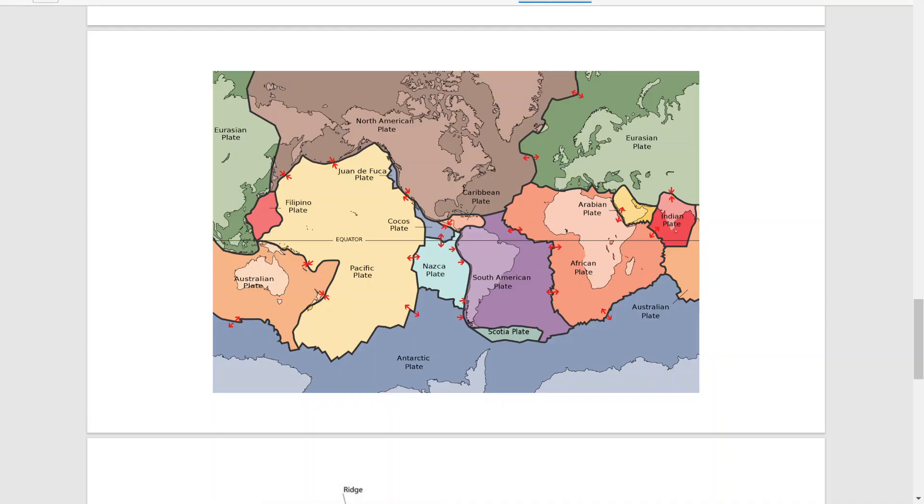As we move on from that to the more modern day picture, here's a nice quick graphic of all the different plates. Ireland, obviously, is here on the Eurasian plate. That's a good one to remember because they like asking that question.